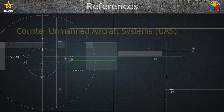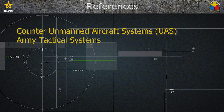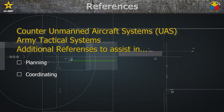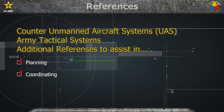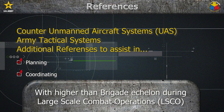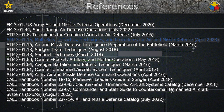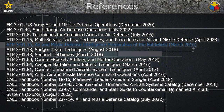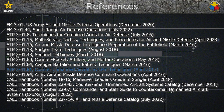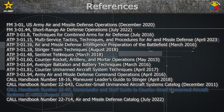I'm Sergeant First Class Kevin Denton. We've provided some Army references regarding counter UAS, Army tactical systems, and additional references to assist in planning and coordinating with higher-than-brigade echelon during LISCO. If you are a novice in planning against enemy UAS, we recommend you begin with ATP 3-01.15, ATP 3-01.16, ATP 3-01.81, and the Center of Army Lessons Learned Handbook 22-07.